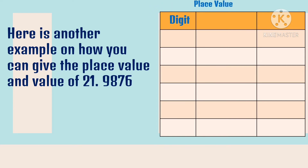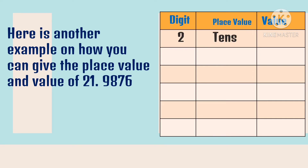Let's write the digit, the place value, and the value. The given digits are 2 — the place value of 2 is tens, because it is a whole number, and the value of 2 is 20. Then the digit 1 is in the ones place, and its value is 1.